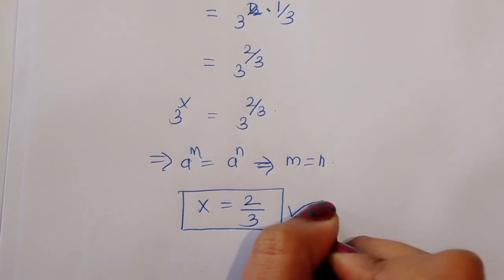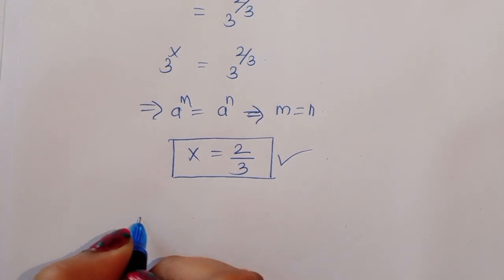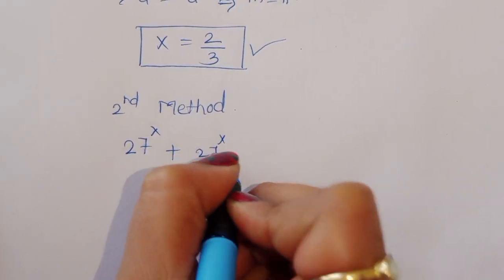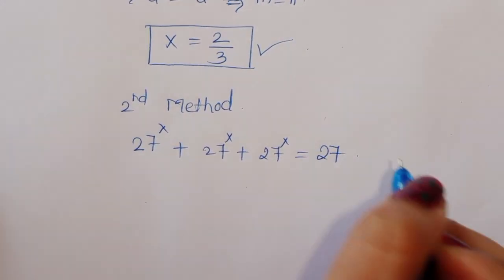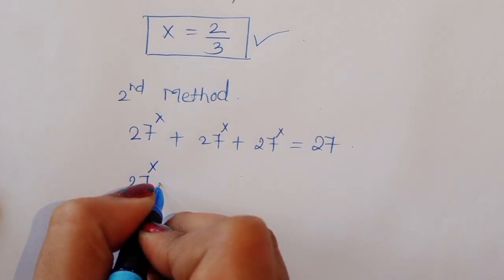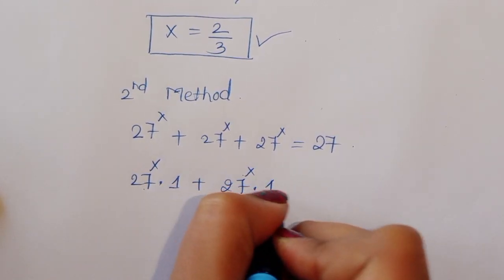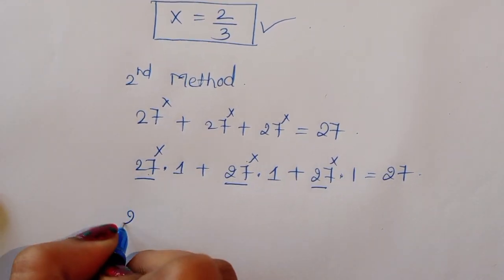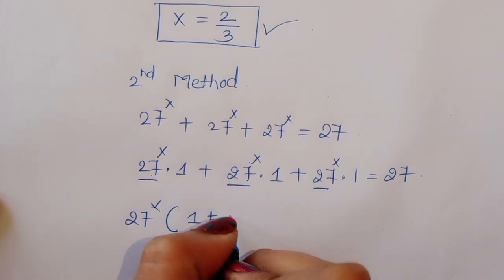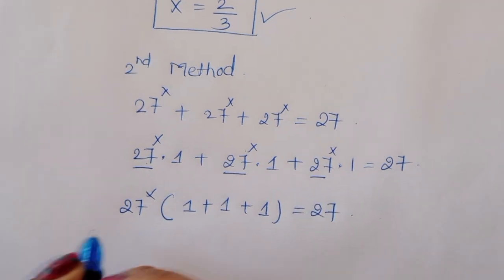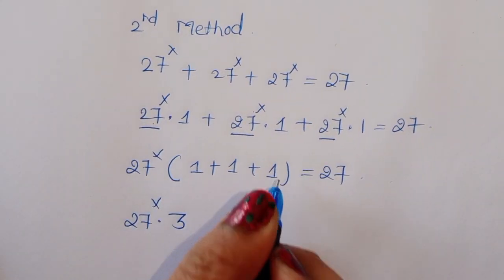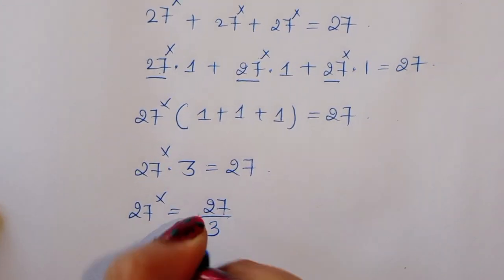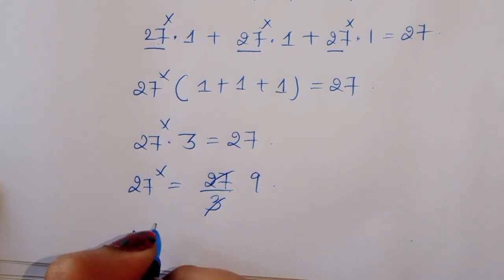This is the value of x by the first method. Now let's see Method 2. Given 27 raised to x plus 27 raised to x plus 27 raised to x equals 27, we can factor out 27 raised to x to get 27 raised to x times (1 plus 1 plus 1) equals 27. So 27 raised to x times 3 equals 27, giving 27 raised to x equals 27 divided by 3, which equals 9.